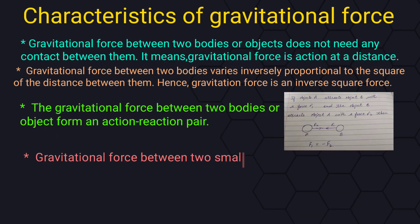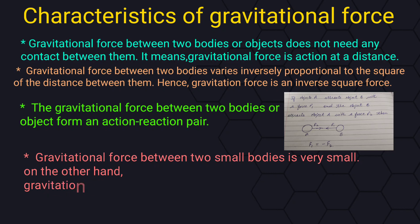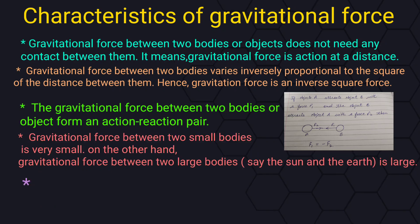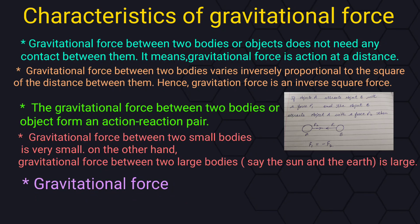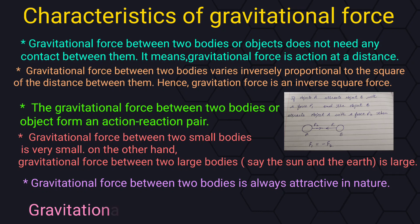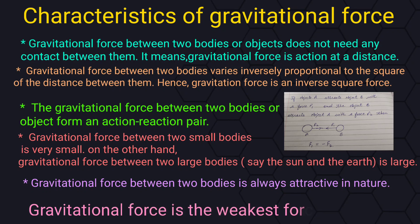Gravitational force between two small bodies is very small. On the other hand, the gravitational force between two large bodies — such as the Sun and the Earth — is large. Gravitational force between two objects is always attractive in nature. Gravitational force is the weakest force in nature.